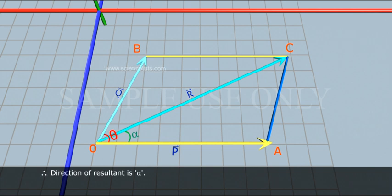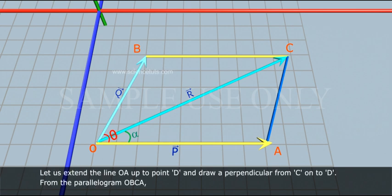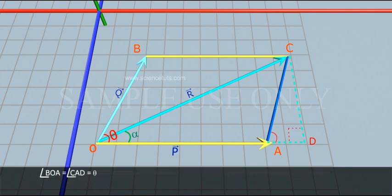Diagonal OC represents the resultant R, that is R-bar equals P-bar plus Q-bar. The angle made by OC with OA is alpha, so the direction of the resultant is alpha. The magnitude of R equals OC. We extend the line OA to point D and draw a perpendicular from C onto D. From the parallelogram OACB, angle BOA equals angle CAD equals theta.